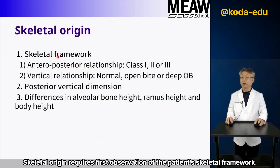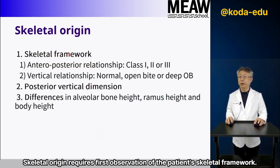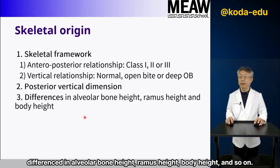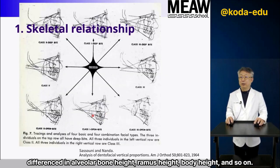Skeletal origin requires first observation of the patient's skeletal framework — that is, anteroposterior relationship, vertical relationship, posterior vertical dimension, differences in alveolar bone height, ramus height, body height, and so on.